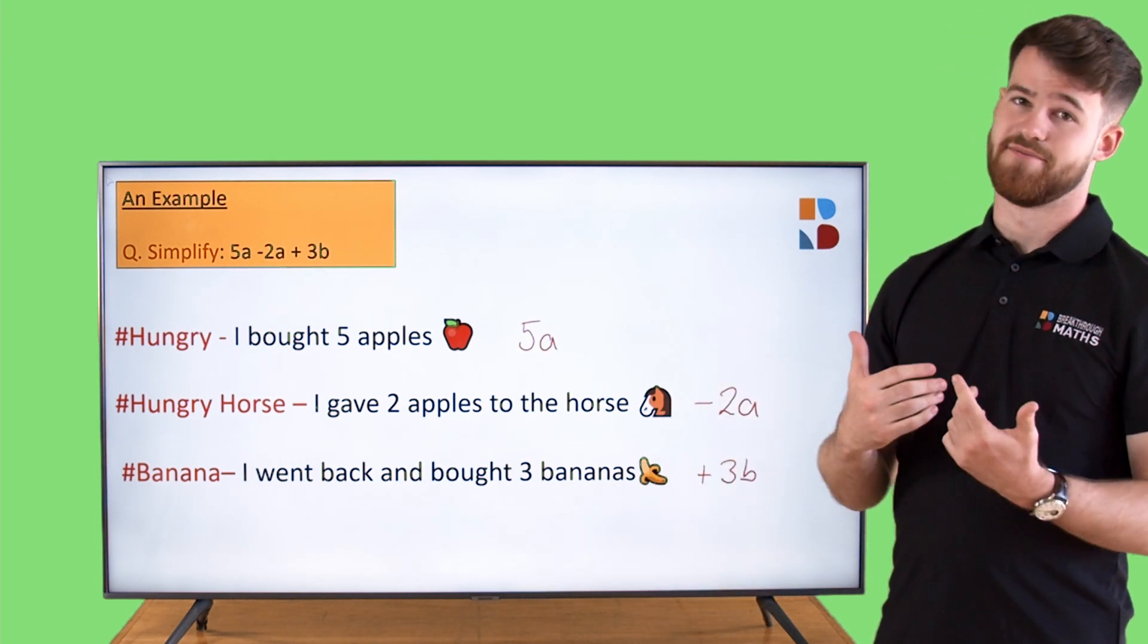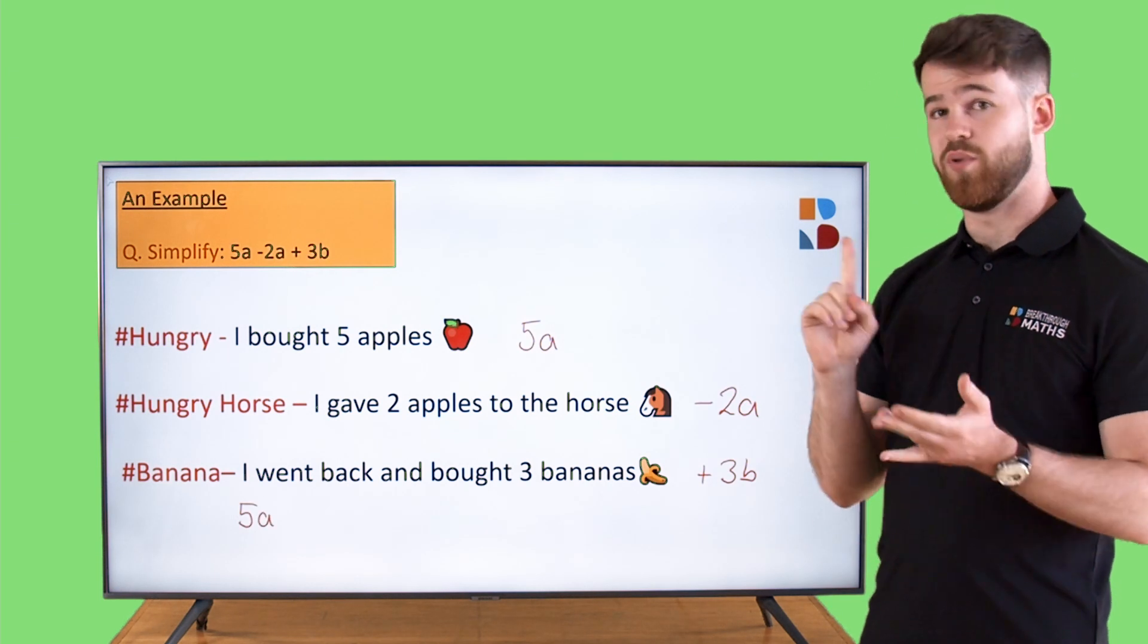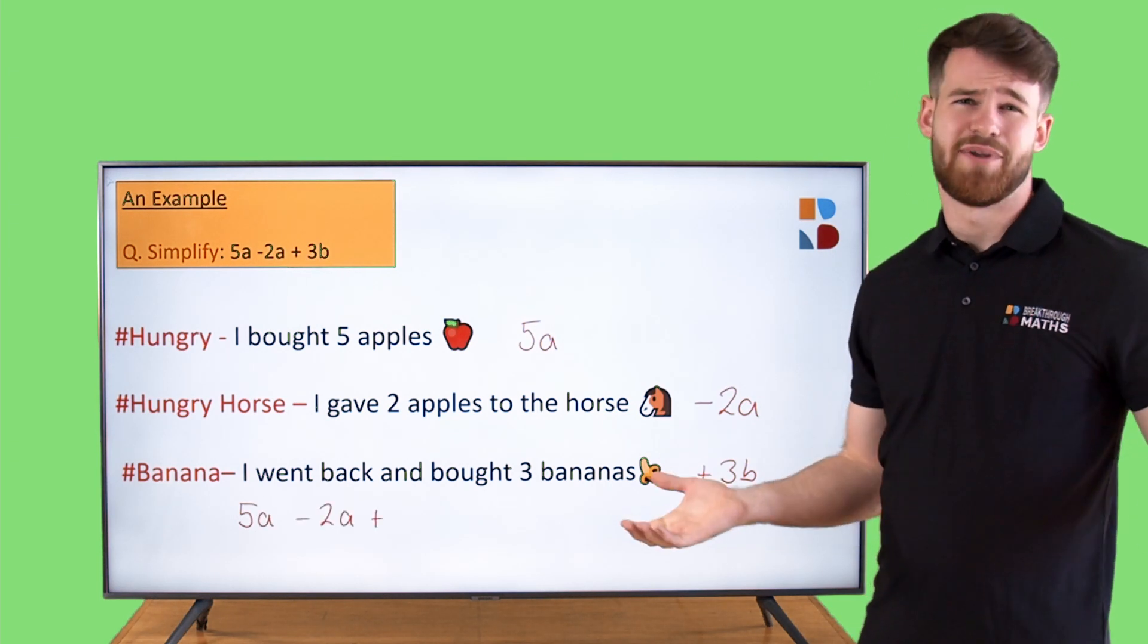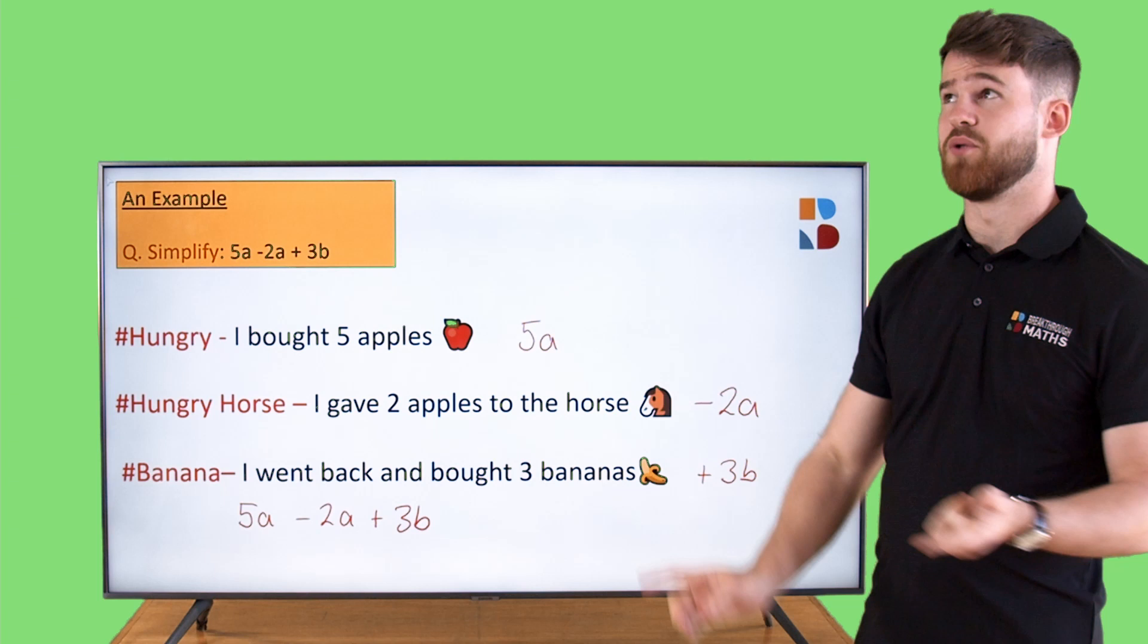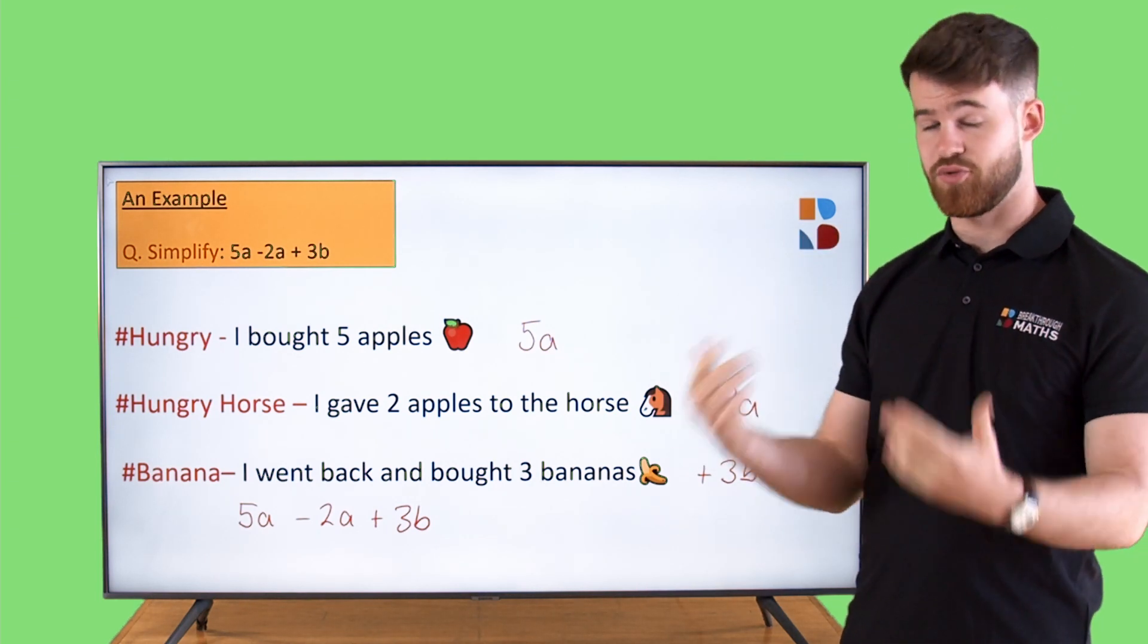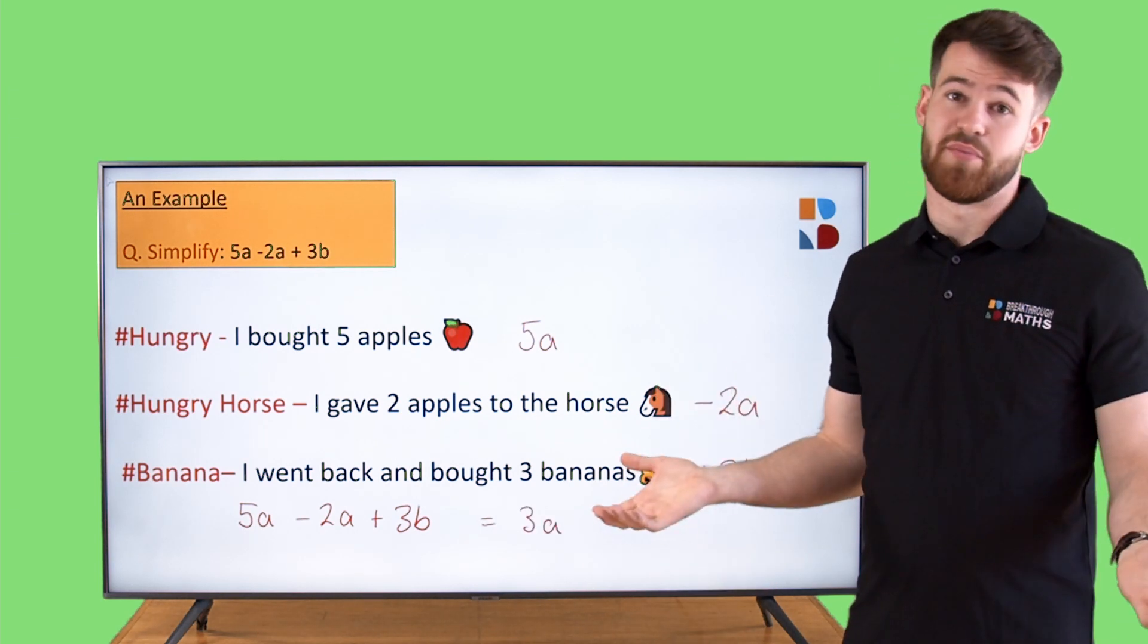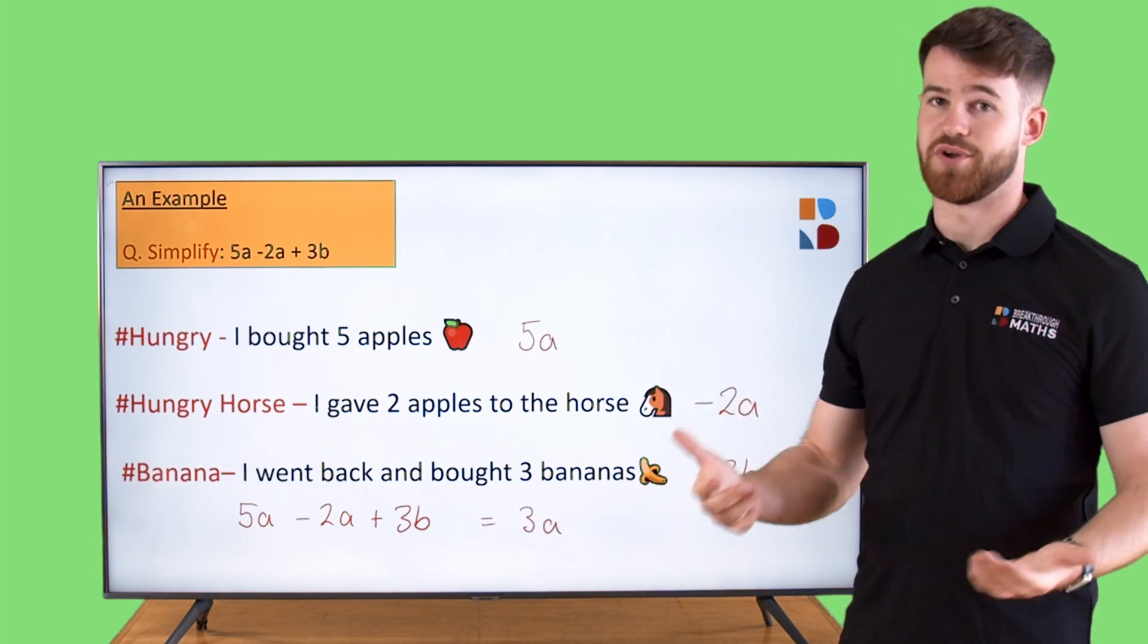So let's tie this all together now. We have 5a minus 2a plus 3b. How many apples and bananas do we have at the end? Well, we had five apples. We gave two apples away, so we have three apples left, or 3a. And we just have three bananas left over, so that's plus 3b.